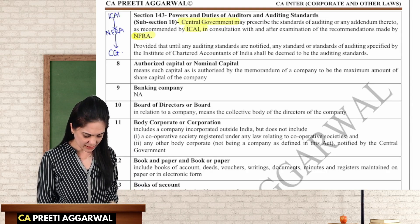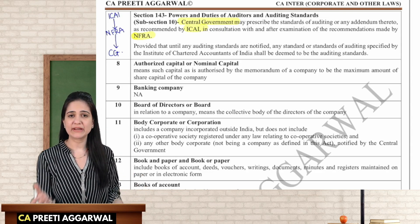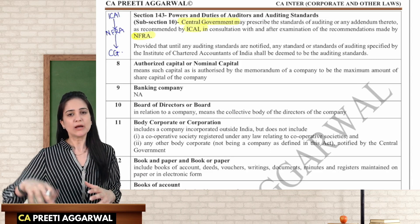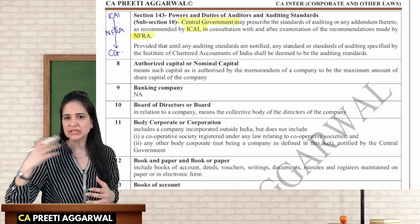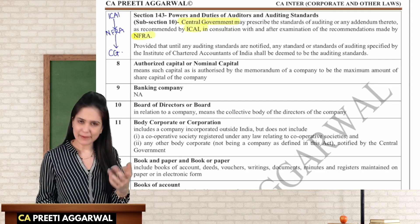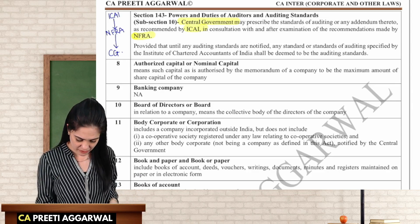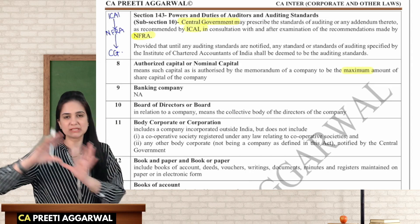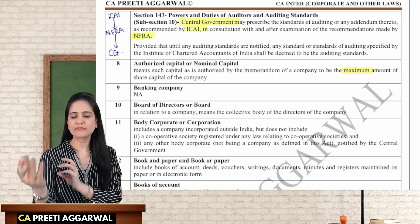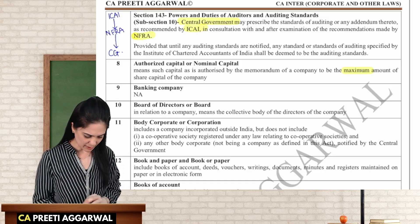Authorized capital or nominal capital: as you are already aware, this is the maximum amount of capital that the company can raise. If you want to raise beyond this, you will have to alter the capital clause in the memorandum. Stamp duty is also payable on the authorized capital amount. The keyword to highlight is 'maximum.'